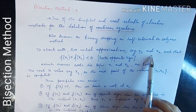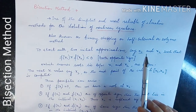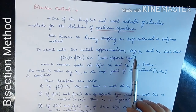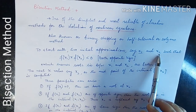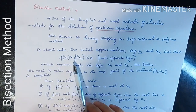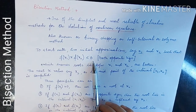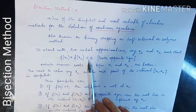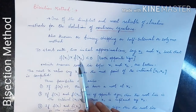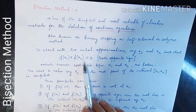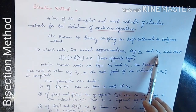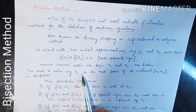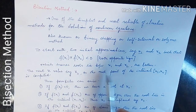In this method, we first take the initial approximations of the root. For a given nonlinear equation, we take two initial approximations x1 and x2 such that f(x1) multiplied by f(x2) is less than zero. If this condition holds, then the root of the equation lies between x1 and x2.